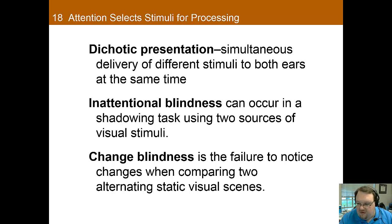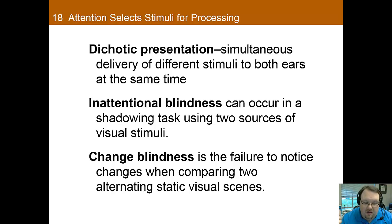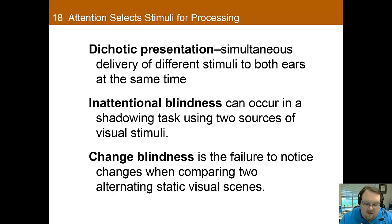There's also an attentional bias, which is where you don't notice things that you're not attending to. With dichotic presentation, for example, when I'm not attending to one ear, I'm essentially blind to that ear — I don't know what's happening in it. This explains the fact that we seem blind to what we're not paying attention to. There's also change blindness, which is a failure to notice changes when comparing two alternating static visual scenes. This relies on short-term memory — you're comparing what you're experiencing now to short-term memory — and that can cause people problems as well.